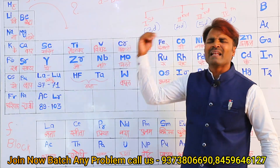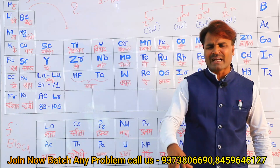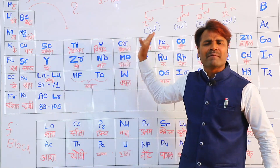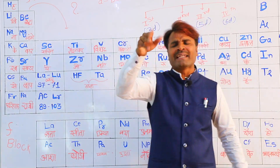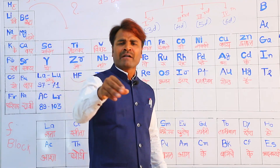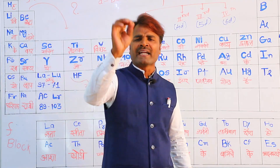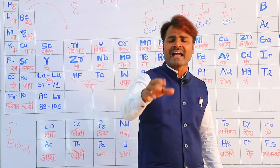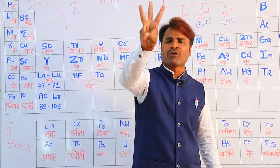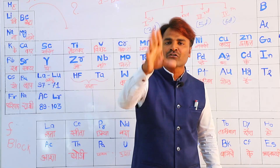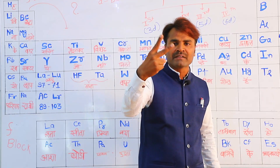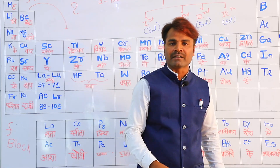First transition series — these ten elements are very important: Scandium, Titanium, Chromium, Manganese, Iron (Fe), Cobalt, Nickel, Copper, Zinc. These ten elements are totally coordination chemistry based, and coordination chemistry has almost three questions. That gives you 12 marks fixed.